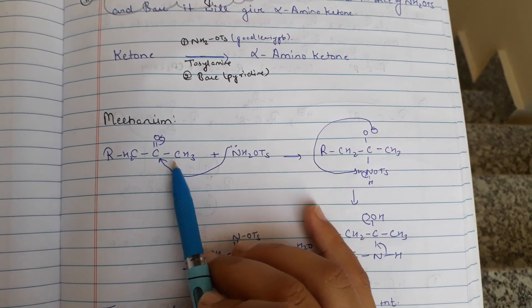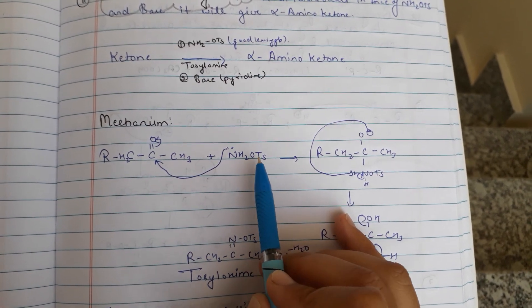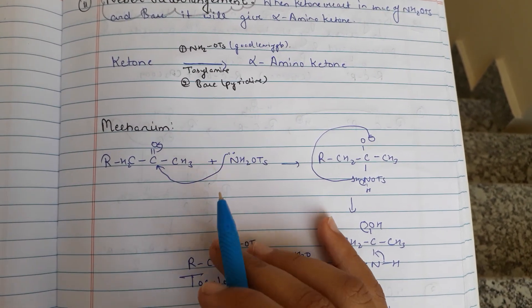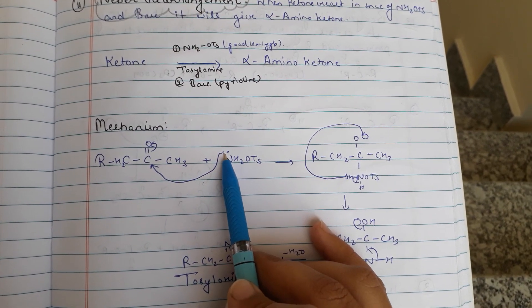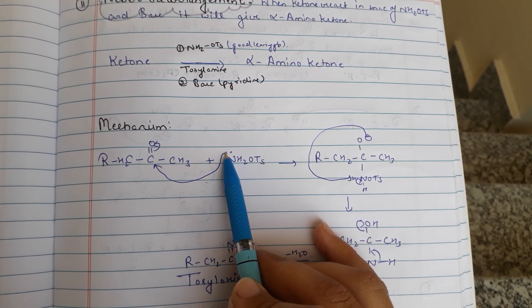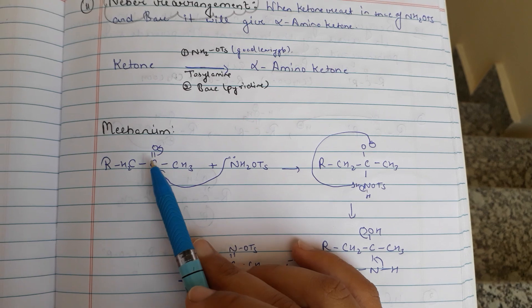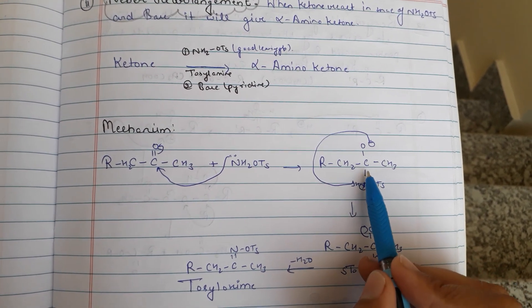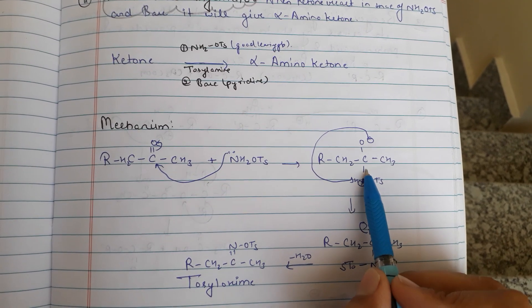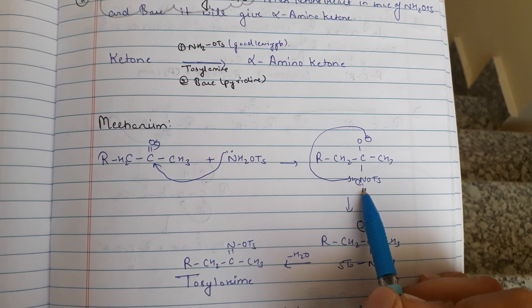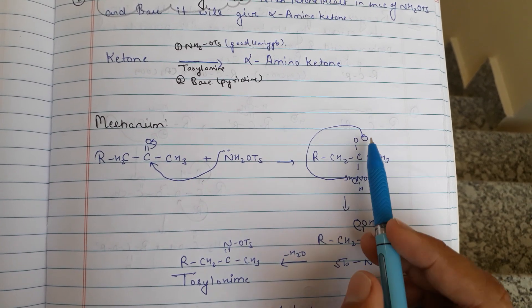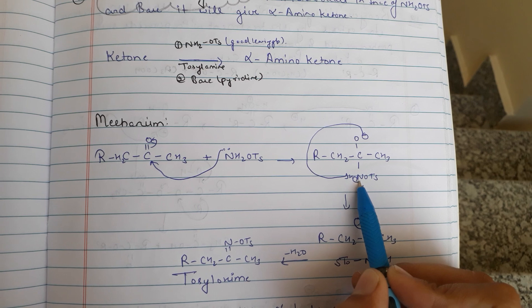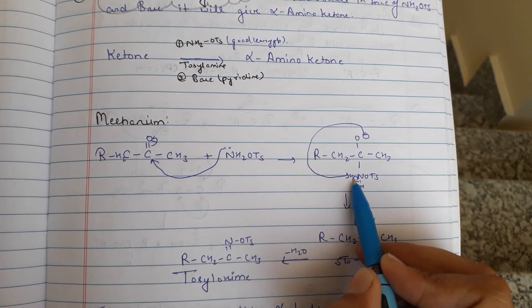The mechanism of this rearrangement is: R-C=O with CH3 is a ketone, and NH2OTs is present. In the Neber rearrangement, the lone pair shifts here and that bond shifts here. Then there's a negative charge on the oxygen atom and attachment of NHOTS. This O negative will take that H because there is NH2.